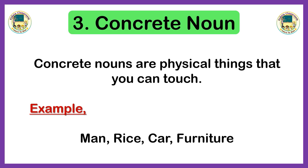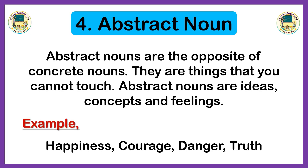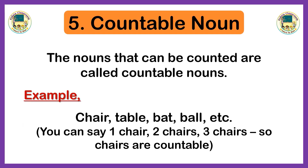Next is the concrete noun. Concrete nouns are physical things that you can touch — for example, man, rice, car, and furniture. The next type is the abstract noun. Abstract nouns are the opposite of concrete nouns; they are things that you cannot touch. Abstract nouns are ideas, concepts, and feelings — for example, happiness, courage, danger, and truth. These are things which do not physically exist but which we can feel.